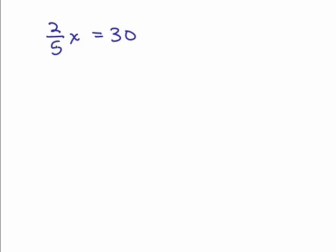So, what if I took, instead of dividing by 2 fifths, remember what dividing by 2 fifths is? It's the same thing as multiplying by 5 halves, but if you multiply the left side by 5 halves, you have to multiply the right side by 5 halves, and you can see the 2's cancel, the 5's cancel, 1, 1, 1, 1, so I get X equals.